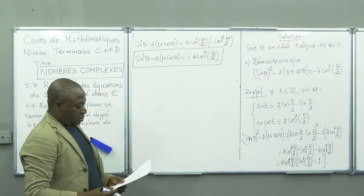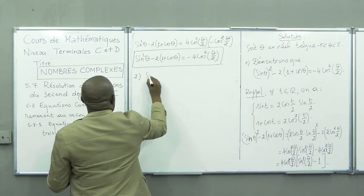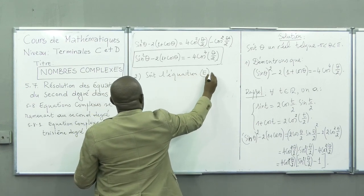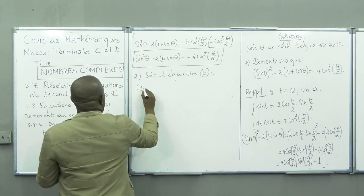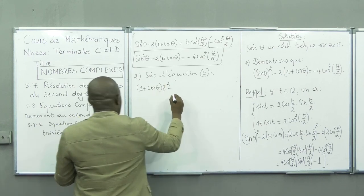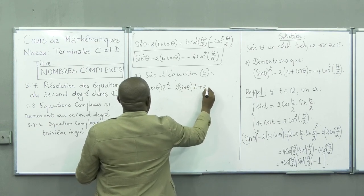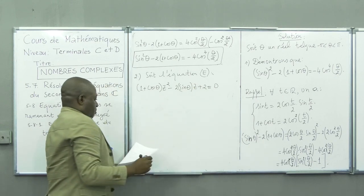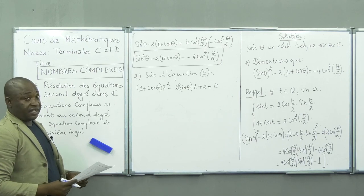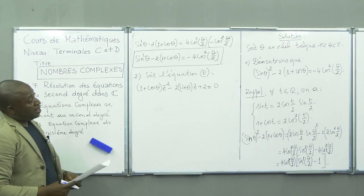Nous allons passer à la deuxième question. Petit a : on nous demande de résoudre l'équation E. Soit l'équation E : (1 + cosθ)z² - 2sinθ·z + 2 = 0. On remarque d'abord que tous les coefficients sont des réels : 1 + cosθ, 2sinθ, et 2 sont tous réels. Donc nous avons une équation du second degré à coefficients réels.